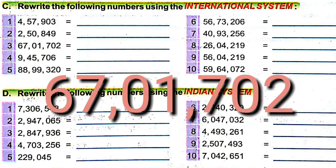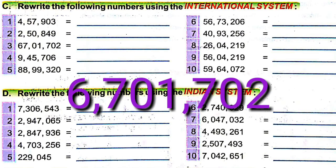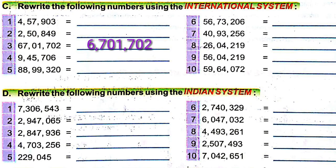The next number is 6701702. This is in the Indian system. There are seven digits. When we write in the international system, we have to put commas before three and six digits — that is between 6 and 7, and between 1 and 7. So the number is 6,701,702.